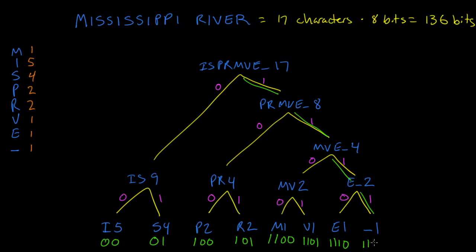Now look here. The letters with the greatest frequency have the shortest bit representations, and the letters with the lowest frequency have the longest bit representations. That's exactly what we wanted.